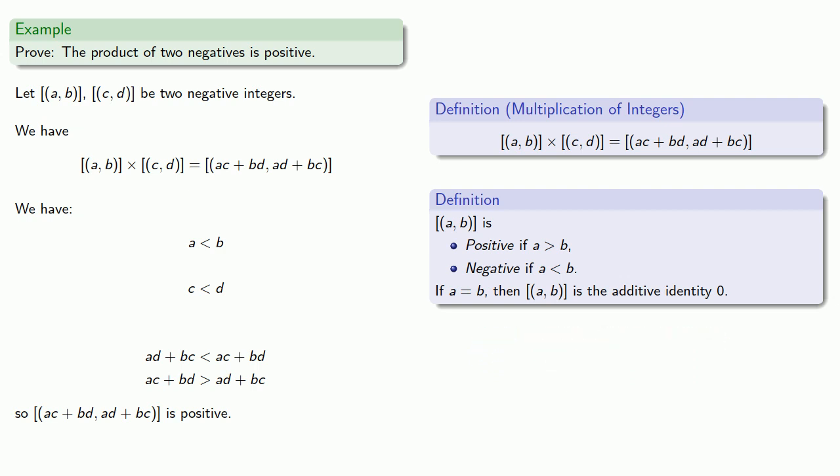So I want ad on the left. Well, if I multiply this first inequality by d on both sides, I do get ad less than bd. I also want bc. So if I multiply this inequality by b, I get my bc. Oh, and now I can add these two inequalities together.